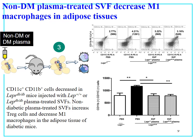Next, we used flow cytometry to demonstrate that M1 cells in adipose tissue treated with non-diabetic plasma SVF or diabetic plasma SVF had decreased. This means that SVF could induce a decrease of M1 expression in type 2 DM. Using CD11c-positive and CD11b-positive cells to evaluate M1 expression in adipose tissue, we confirmed that M1 cells decreased after injection of SVF.